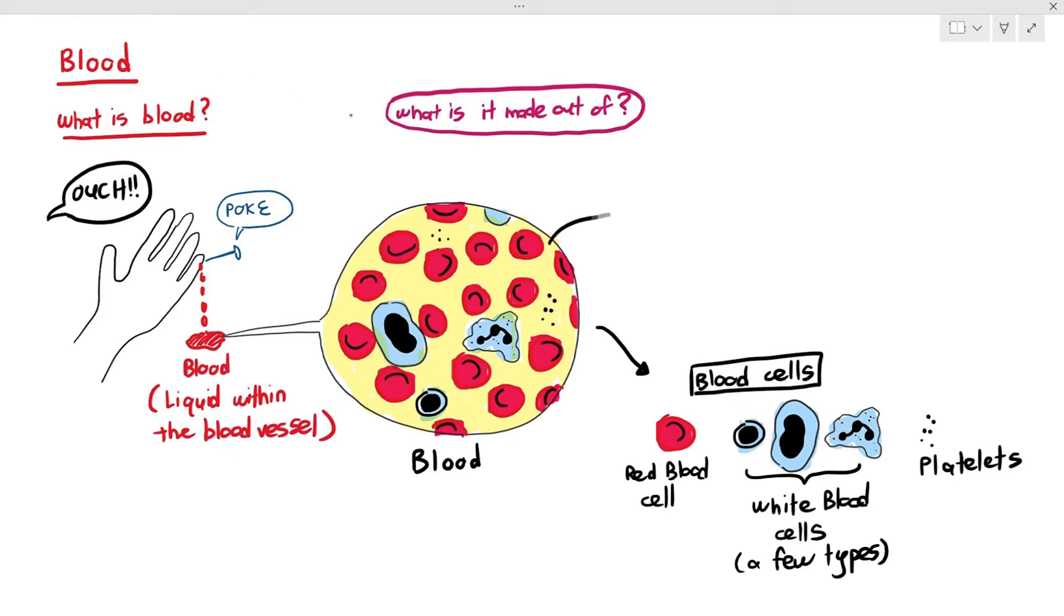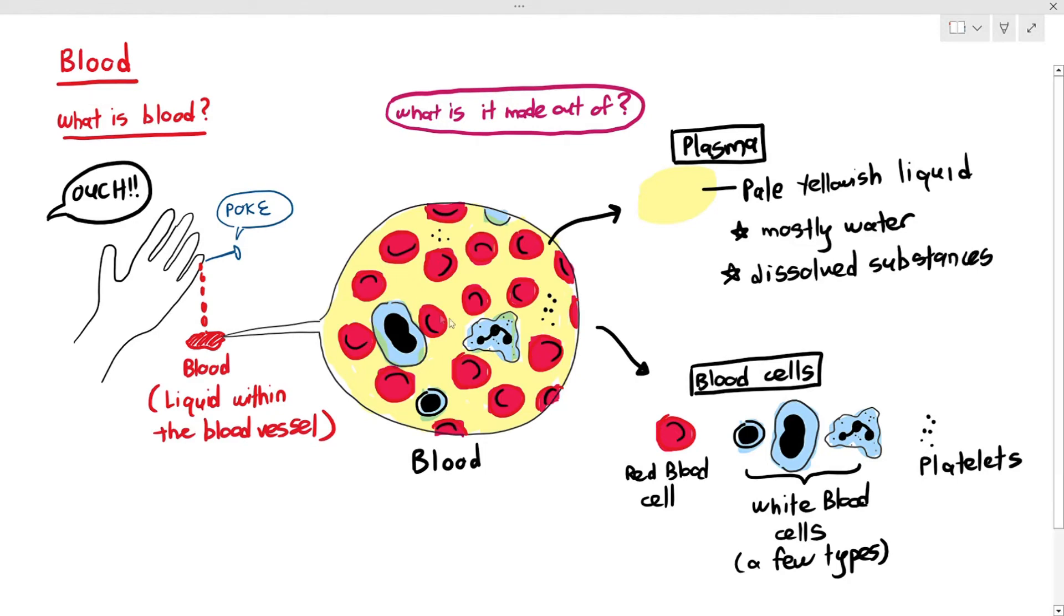Now, the blood cells are actually floating around in this faint yellowish liquid. Now, what is this faint yellowish liquid called? This is the liquid part of the blood referred to as plasma. And the colour of plasma, as I've just said, is a pale yellowish colour, and it's mostly just made out of water and dissolved substances.